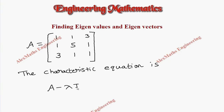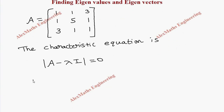Since lambda is multiplied with the identity matrix I, which has elements only in the leading diagonal, we get lambda I as a matrix with lambda, 0, 0 on the diagonal. When we subtract from A, the leading diagonal elements become 1 minus lambda, 5 minus lambda, and 1 minus lambda, while the rest of the elements remain the same.